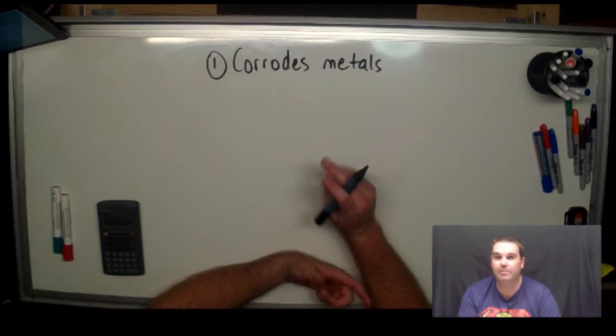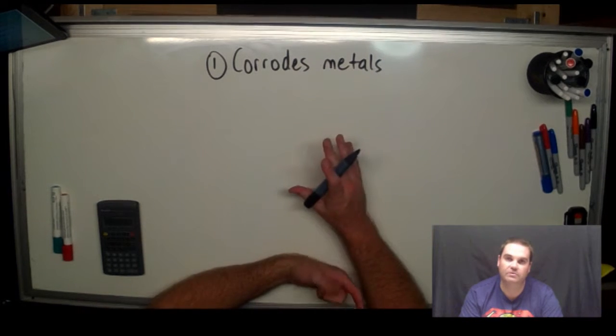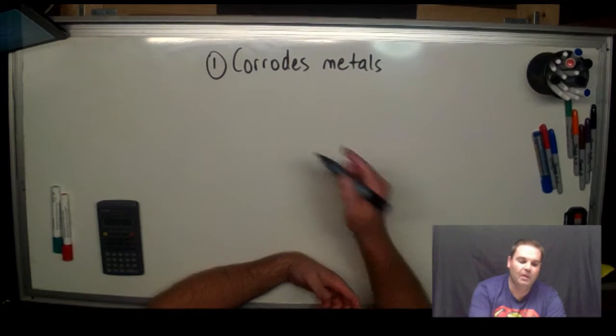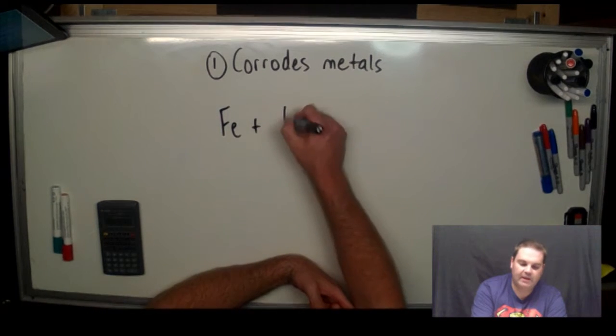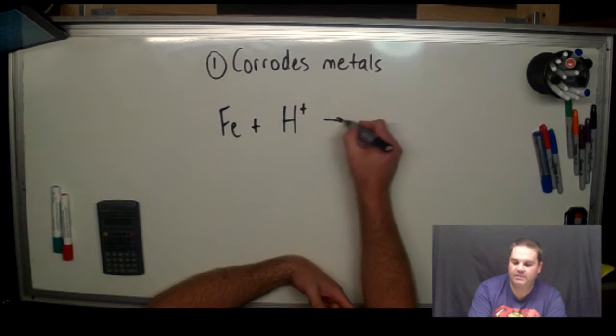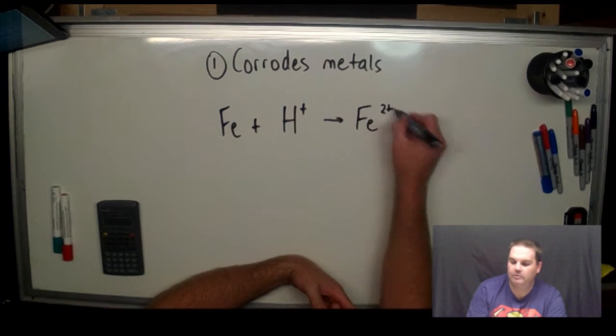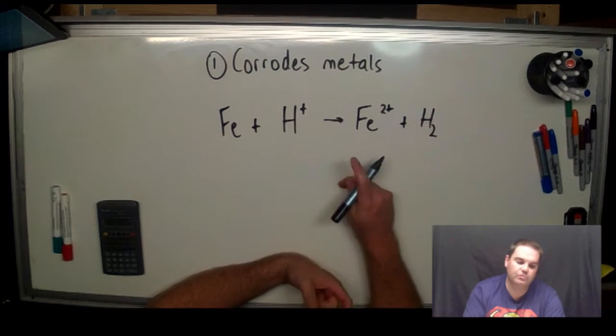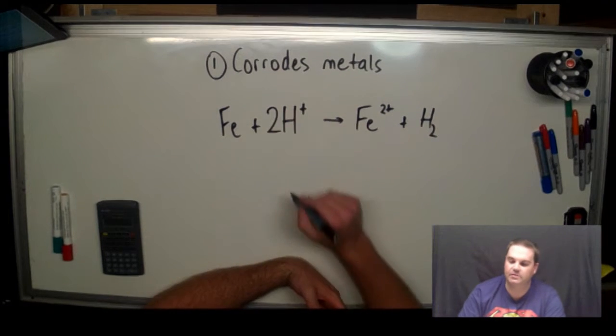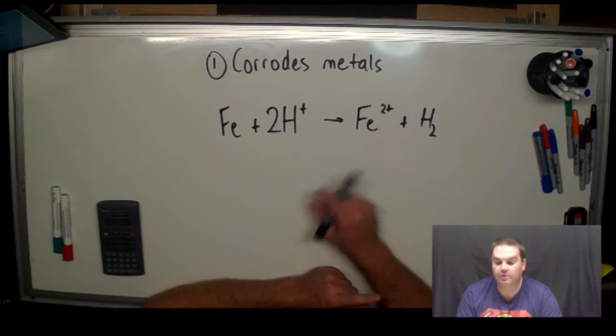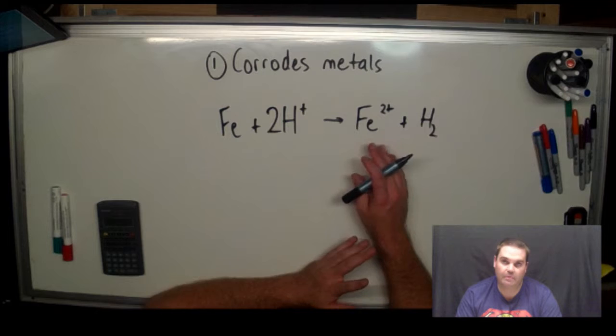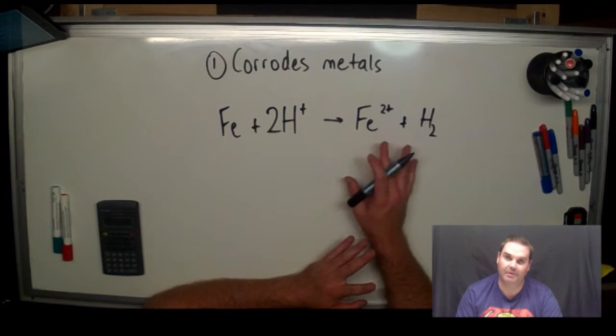So iron plus acid gives us ferrous ions and hydrogen gas. It's just a straight metal acid reaction, balance it up with the two there. So it corrodes these structures, makes them soluble, and so over time the metal corrodes and needs to be replaced. That's a bad thing.